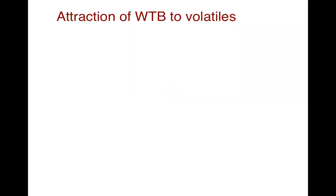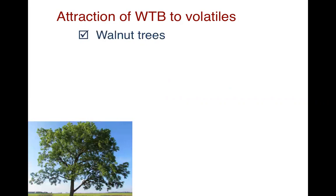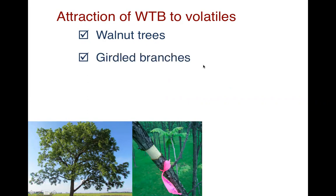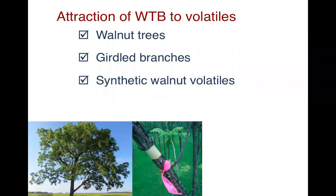What we know about the attraction to walnut twig beetle volatiles: they're attracted to walnut trees and to girdled branches and the volatiles of girdled branches. They are attracted to some extent to synthetic walnut volatiles, but that information is still rather preliminary and should be coming in the near future.